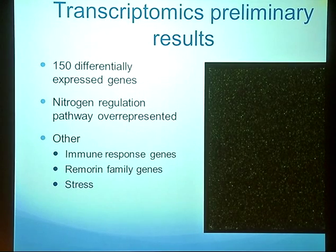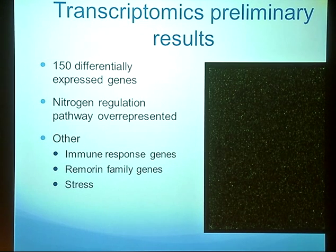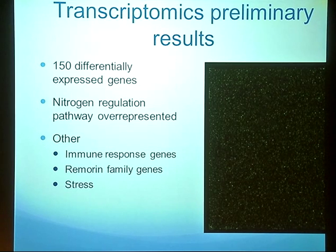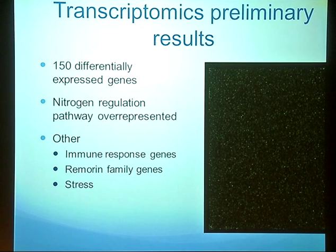We are just getting the first results from the transcriptomics, currently for two time points. We found quite a large list of about 150 differentially expressed genes. Most interestingly, about 15 percent of those were from nitrogen regulation or nitrogen metabolism, suggesting an overlap in response. Some other interesting genes were from immune response and pathogen defense. We also found a couple of genes from the Remerin family, which regulates microbe-plant interactions and is implicated in Medicago nod factor response. We also found some stress genes. The next step is to build a more coherent picture of the transcriptomic time series, analyze all data in coming months, and select genes to investigate further, probably by qPCR.